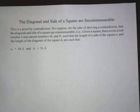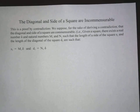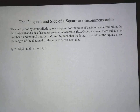Today we're going to talk about the incommensurability of the diagonal and the side of a square. Our proof is by contradiction. We suppose for the sake of deriving a contradiction that the diagonal and the side of a square are commensurable.